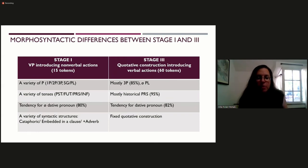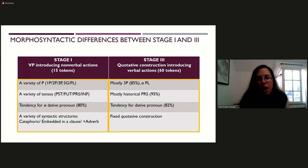The following slide summarizes the morphosyntactic differences between the use of Asa as a verb phrase introducing nonverbal actions and as part of a quotative construction. I don't have time to focus on each of these differences. I'll just say that they suggest the categorization, losing the morphosyntactic optionality of a linguistic form, which is one of the main principles of grammaticization.